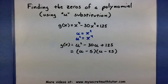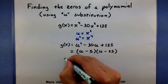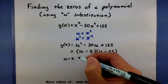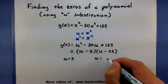This means that basically I have two zeros for this function when u is equal to 5 and when u is equal to 25.